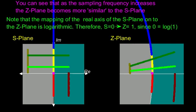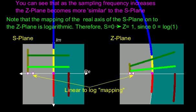It's worth noting that the spacing of the colored lines along the horizontal axis is not the same since the mapping is logarithmic. This is why the DC point of S equal to 0 maps to the Z plane position of Z equal to 1.